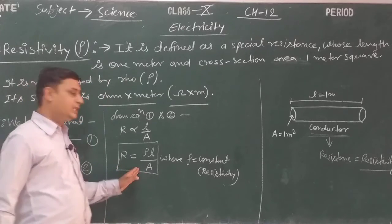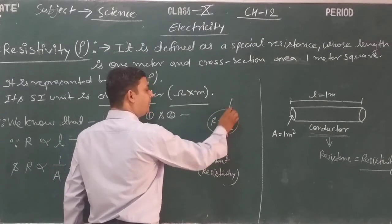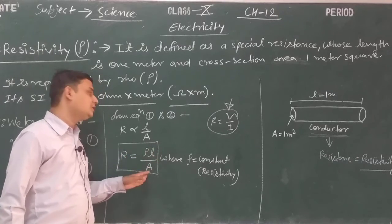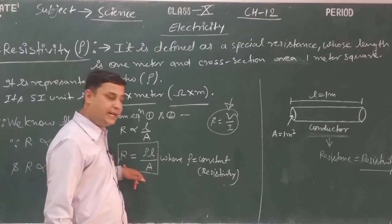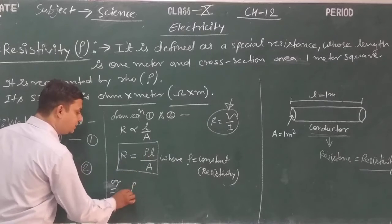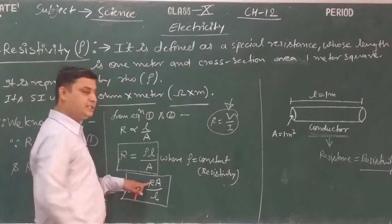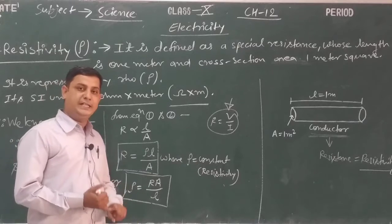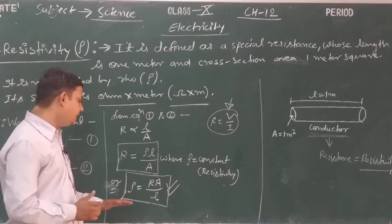Previously, we studied the formula of resistance using Ohm's law: R = V / I. That is another formula of resistance. The new formula is in the form of resistivity, length, and cross-section area. Depending on the numerical problem, we choose the appropriate formula. By rearranging R = rho × L / A, we get the formula of resistivity: rho = R × A / L. This is used to calculate the resistivity of any conductor.